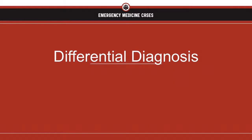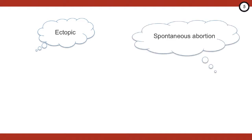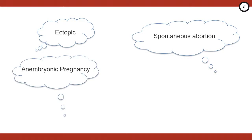Let's lay down a differential. We're emergency physicians, so obviously we all think about ectopic pregnancy, and we probably should because it carries a 10% mortality risk. The other diagnosis that quickly comes to mind is spontaneous abortion, and this is what most patients are going to be worried about. Another you have to consider is an anembryonic pregnancy, formerly known as blighted ovum — this is where you have a gestational sac but no fetal pole or visible yolk sac.